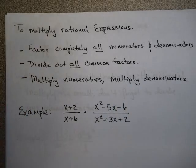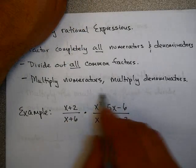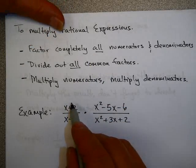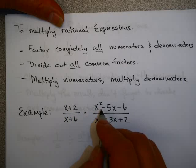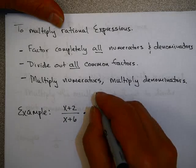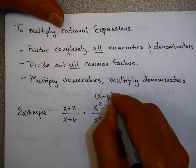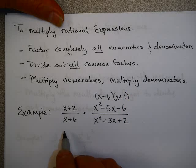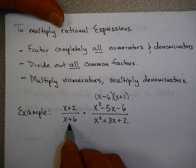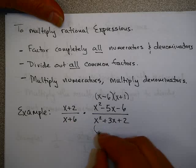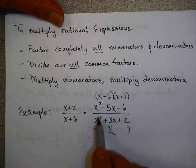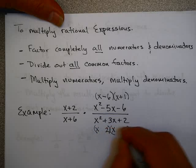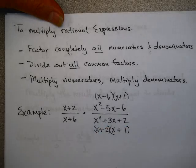Let's look at a little more difficult problem. Looking at our numerators: x plus 2 — can't factor that, it's already factored. But x squared minus 5x minus 6 — yes, that factors as x minus 6 times x plus 1. And x plus 6 — can't factor that. But x squared plus 3x plus 2: I get an x and an x, and a 2 and a 1, so it factors as x plus 2 times x plus 1.